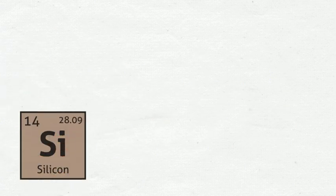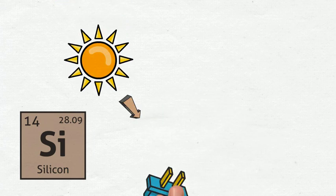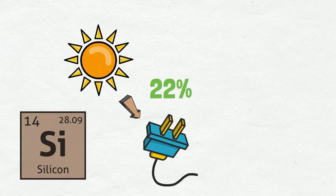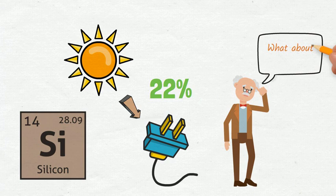Crystalline silicon is the material used to fabricate most commercial cells. They convert solar into electrical power with an efficiency of roughly 22%, which for solar cells is actually a pretty decent number. But do they perform as well in space as they do on Earth? Well, not quite.